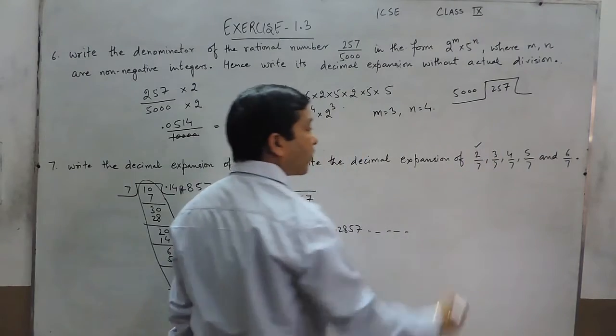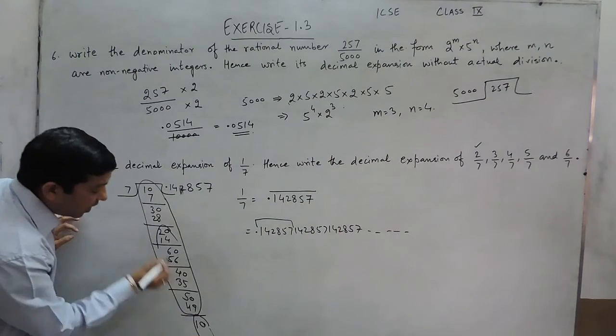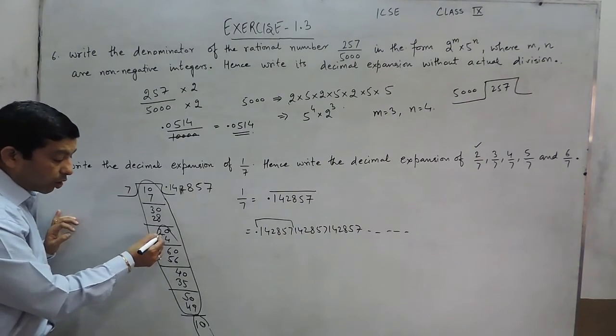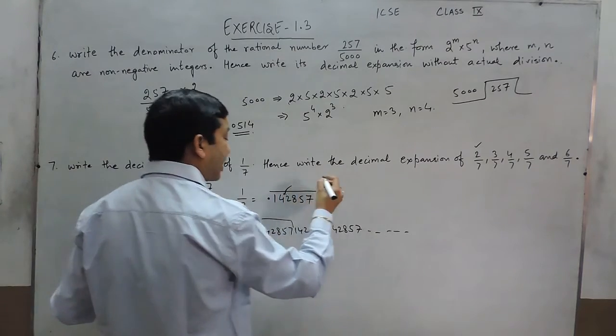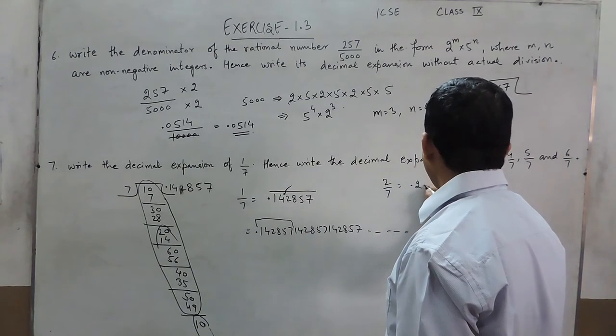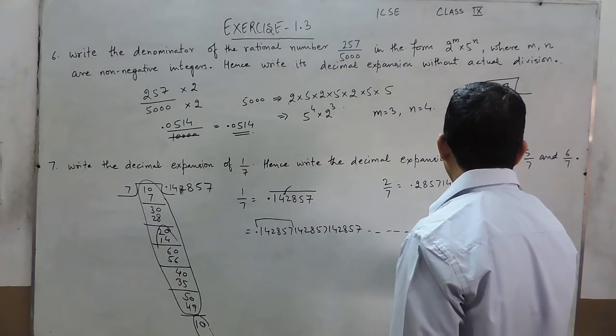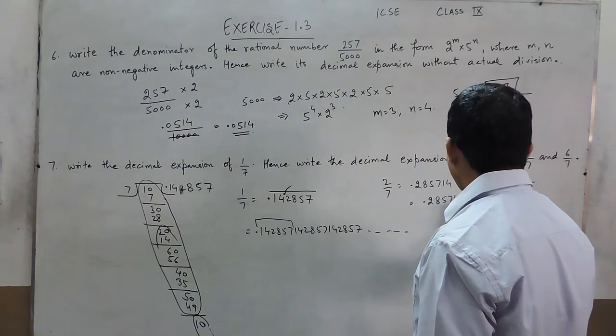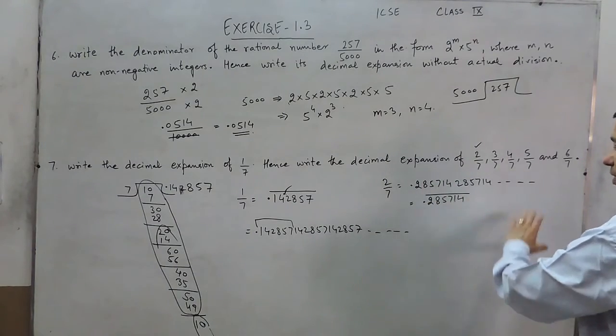Now, if I have to write a value of 2 upon 7, that means the process will start from here and whenever we will get 2, then again the process will repeat itself. For 2, the process will start from this point and when the process is starting from this point, that means 2 upon 7 can be written as 0.285714, or it can be written as 0.285714 with a bar. That means these numbers are repeating themselves endlessly.